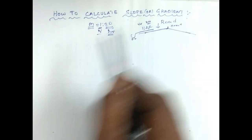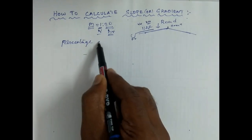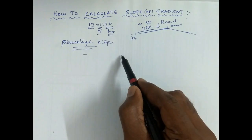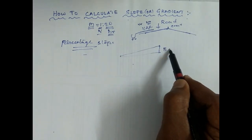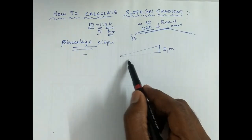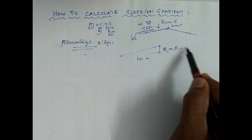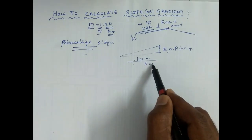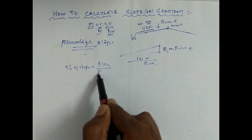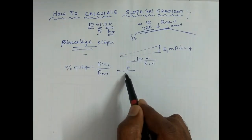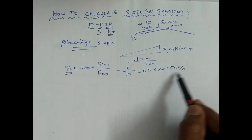Here we have 2 methods. Method 1 is percentage slope. For example, if we have a rise of 5 cm and a run of 10 m, then percentage of slope equals rise divided by run, so 5 divided by 10 equals 0.5, multiplied by 100 equals 50% slope.